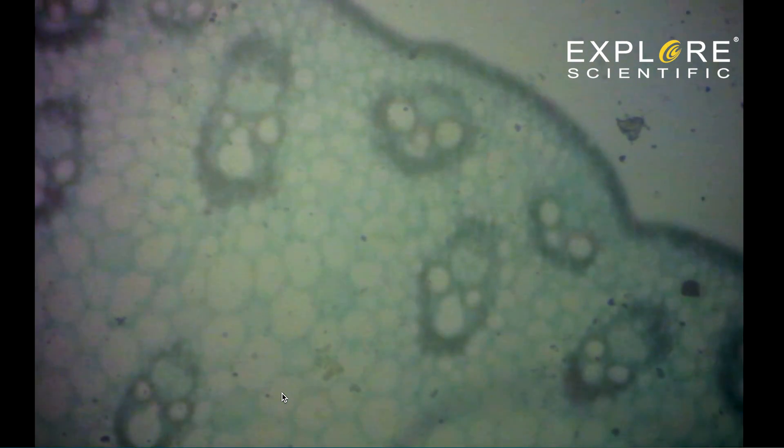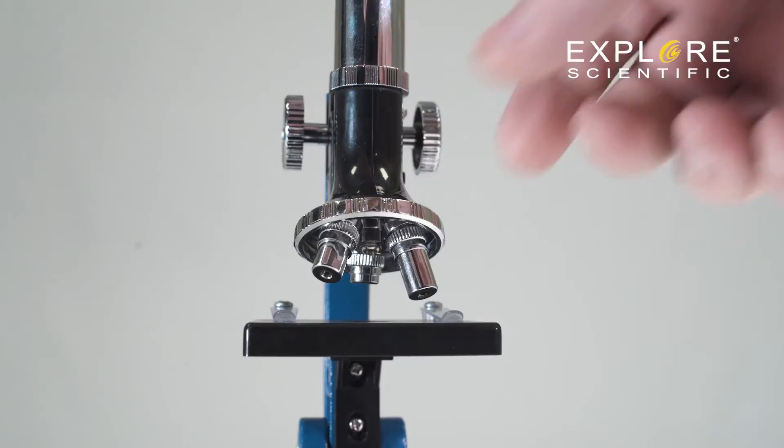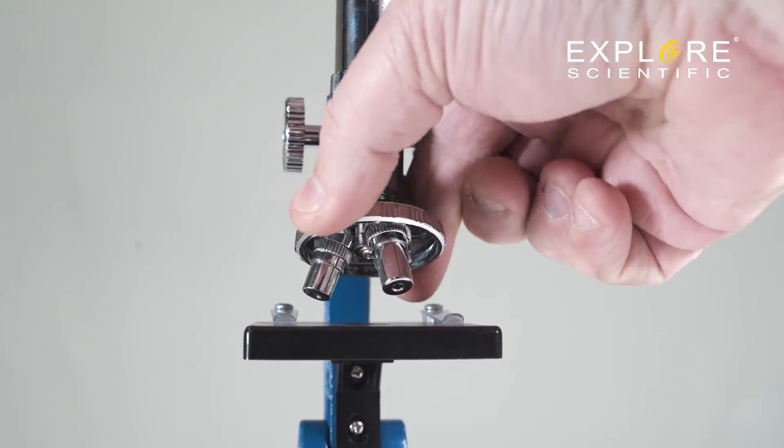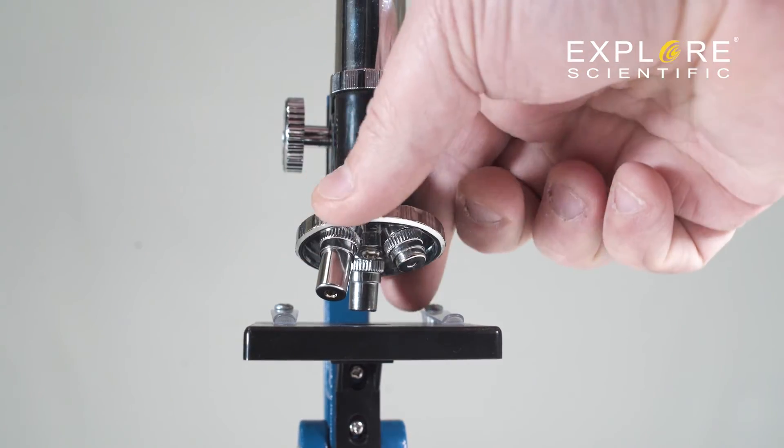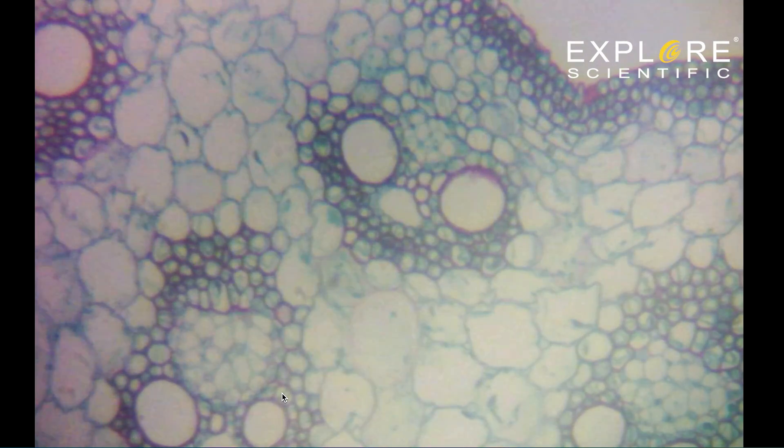Once comfortable with how the microscope works and with a specimen in focus with low power, turn the turret to rotate the next lens into place. Be sure to switch to the middle size lens because it's easier to go from low power to medium power than it is to go from low power to high power.